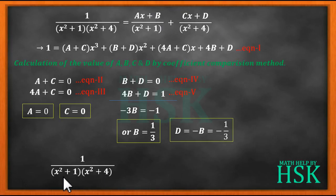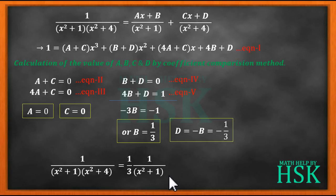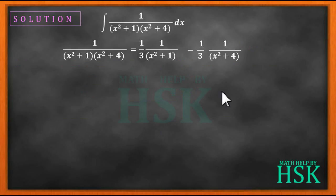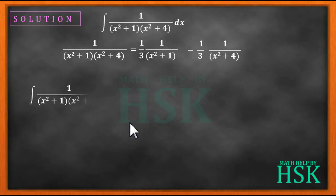So 1/[(x² + 1)(x² + 4)] equals (1/3)·[1/(x² + 1)] minus (1/3)·[1/(x² + 4)]. The function which we have to integrate can now be written in this decomposed form.